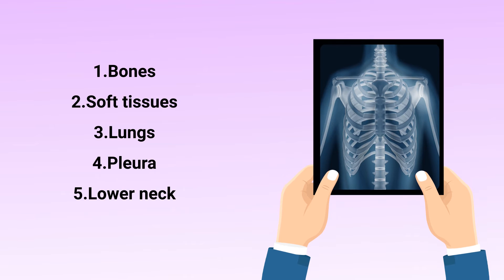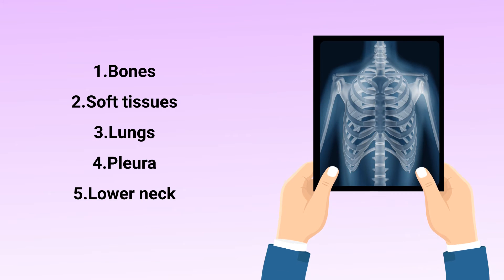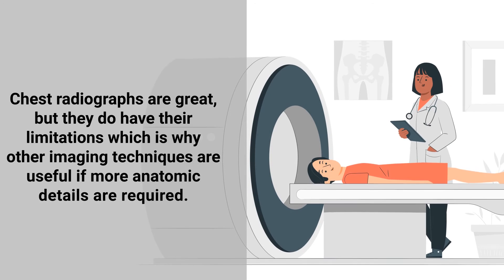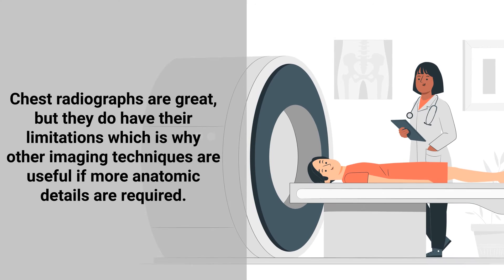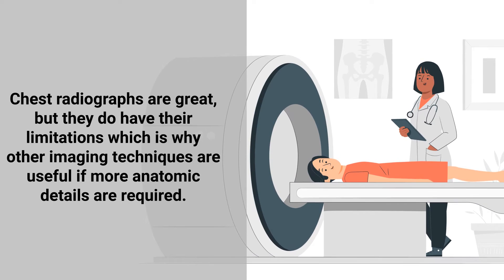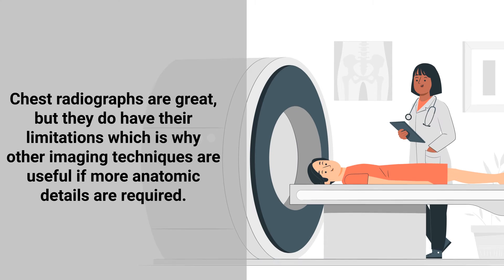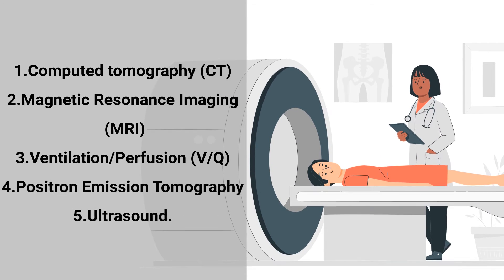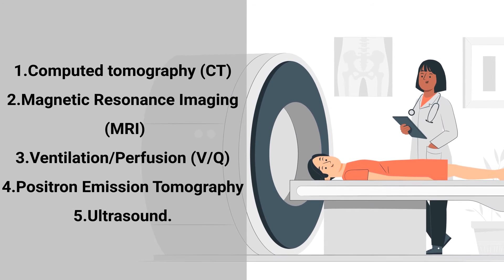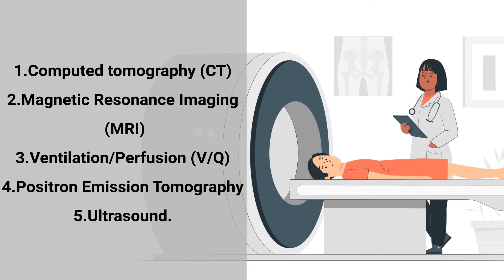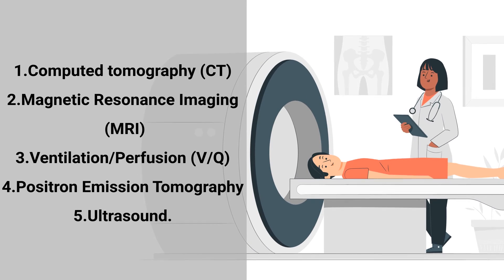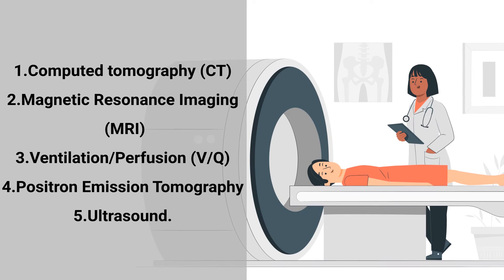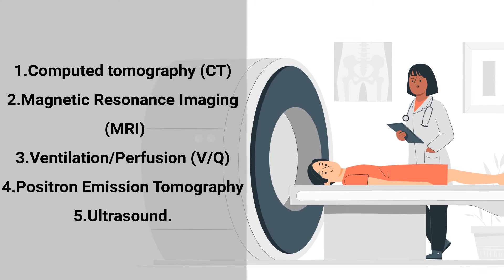A chest x-ray also provides visualization of the lower neck. Chest radiographs are great but they do have their limitations, which is why other imaging techniques are useful if more anatomic detail is required. Some examples include a CT scan, MRI, VQ scan, PET scan, and an ultrasound, each of which we have covered in separate videos on our channel.